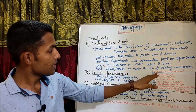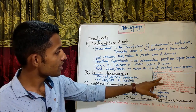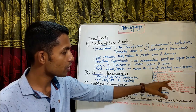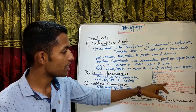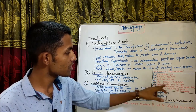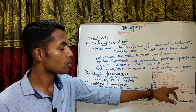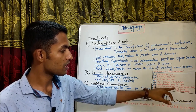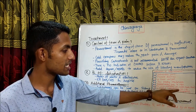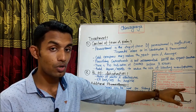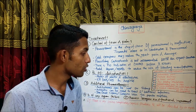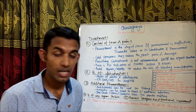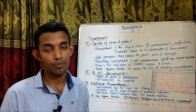Indications for hospitalization include: intractable pain, postural dizziness, decreased urine output, any bleeding manifestations, repeated vomiting leading to nothing per oral, serious complications like CNS, cardiac, hepatic, or renal involvement, and comorbid conditions such as chronic kidney disease (CKD), chronic liver disease (CLD), cardiovascular disease (CVD), diabetes mellitus, or pregnancy.